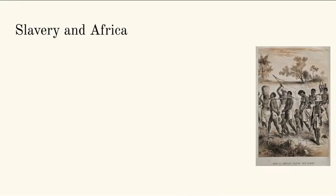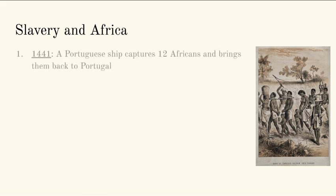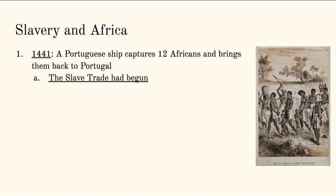We're going to talk about slavery in Africa briefly because you're going to cover it quite a bit more in eighth grade. This is the root of the transatlantic slave trade — slaves from Africa being brought to other areas. It starts with Portugal. In 1441, a Portuguese ship comes to Africa, captures 12 Africans, and brings them back to Portugal as slaves and as examples of what Africa has to offer. The slave trade officially begins in 1441 with the Portuguese bringing Africans back to Portugal.